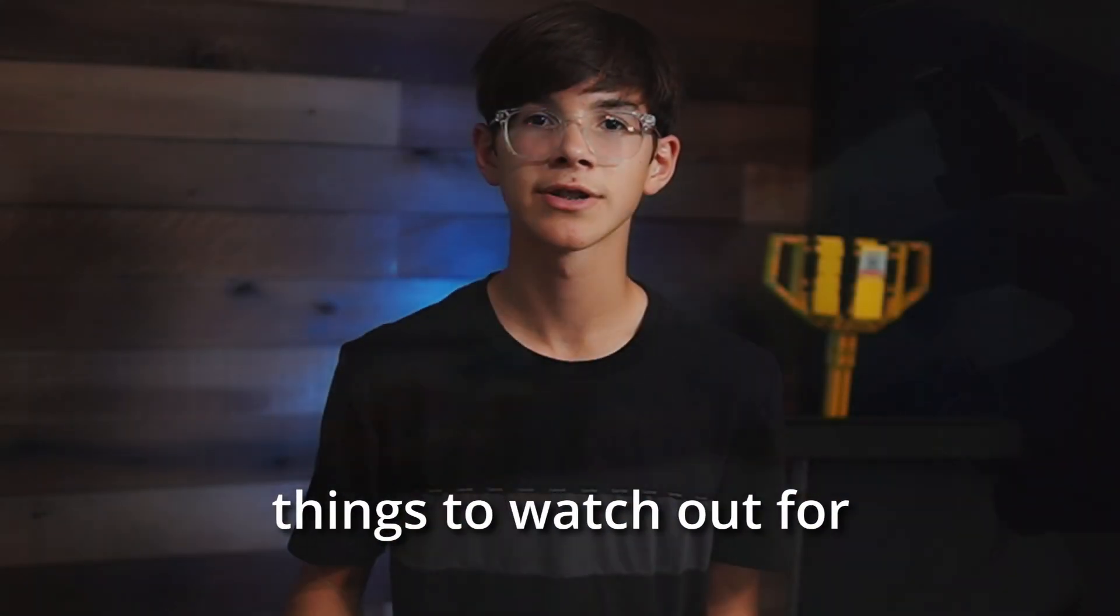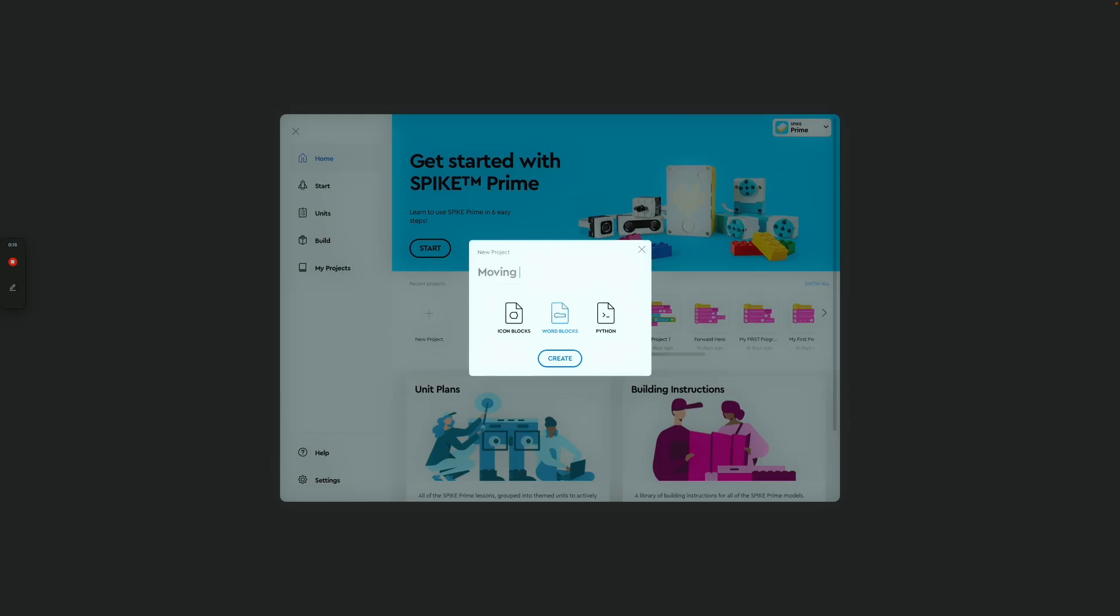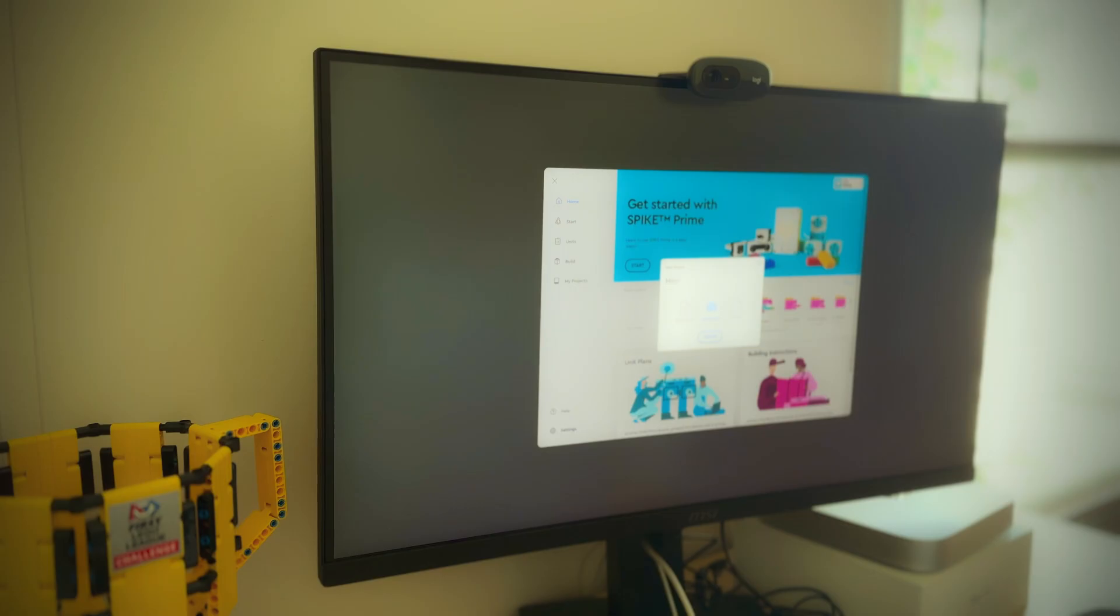Next, open the SPIKE Prime app. We're going to click new project and make it a block project. You can name it whatever you want.